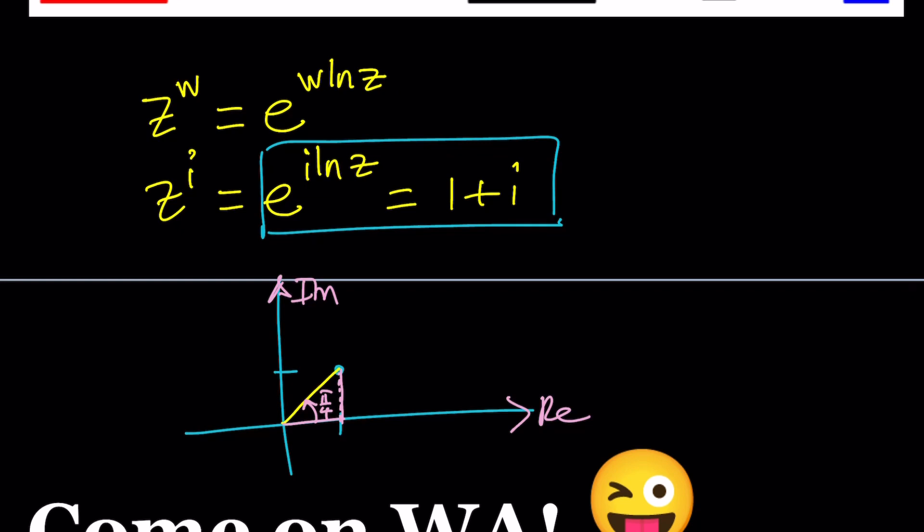Okay, 1, i. Okay this is our number 1 plus i. And this is the polar representation. How do you write this in polar form then? You do need r e to the i theta for the number.